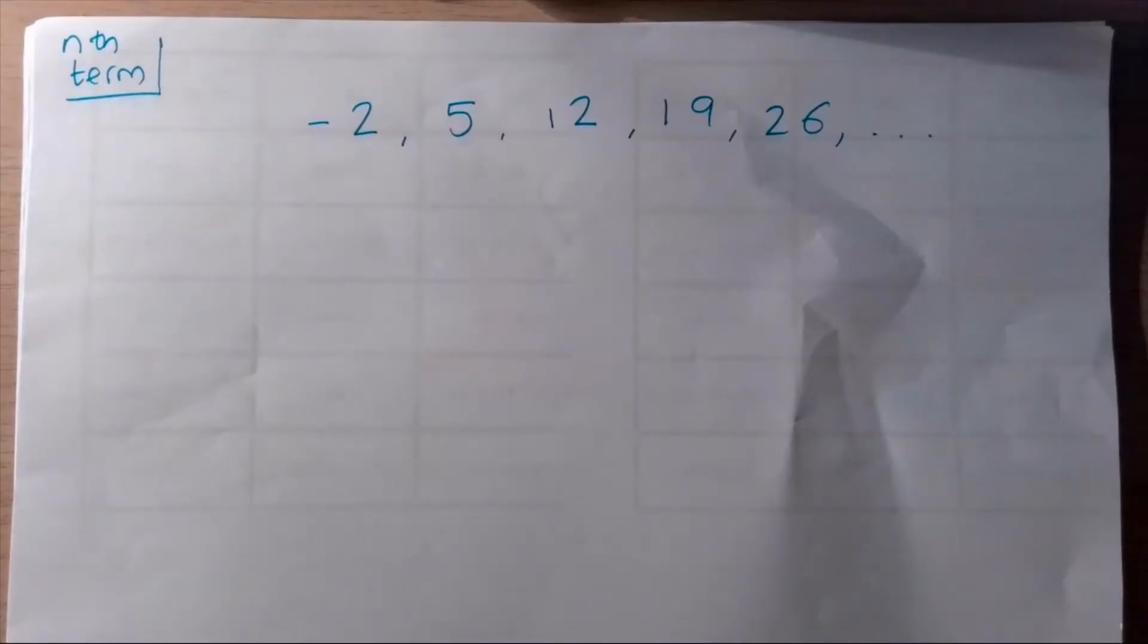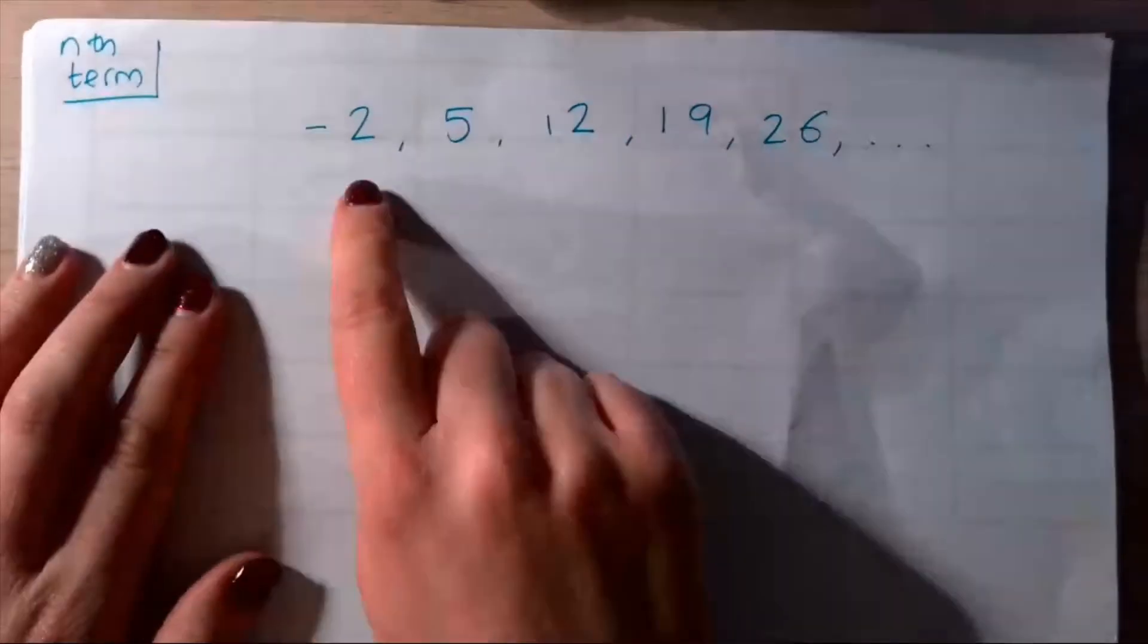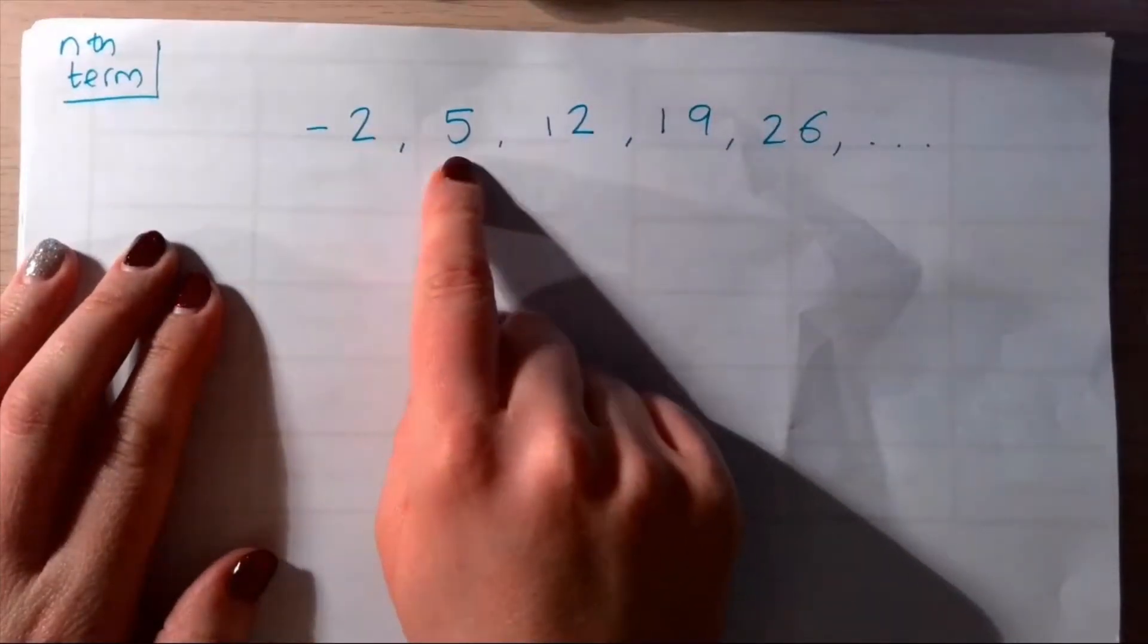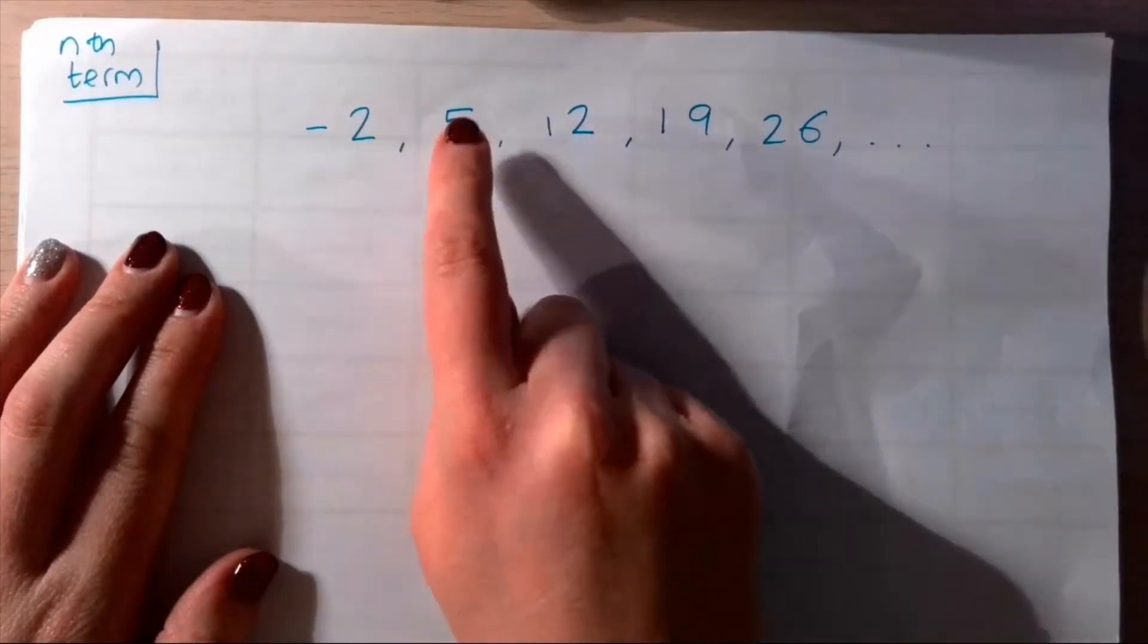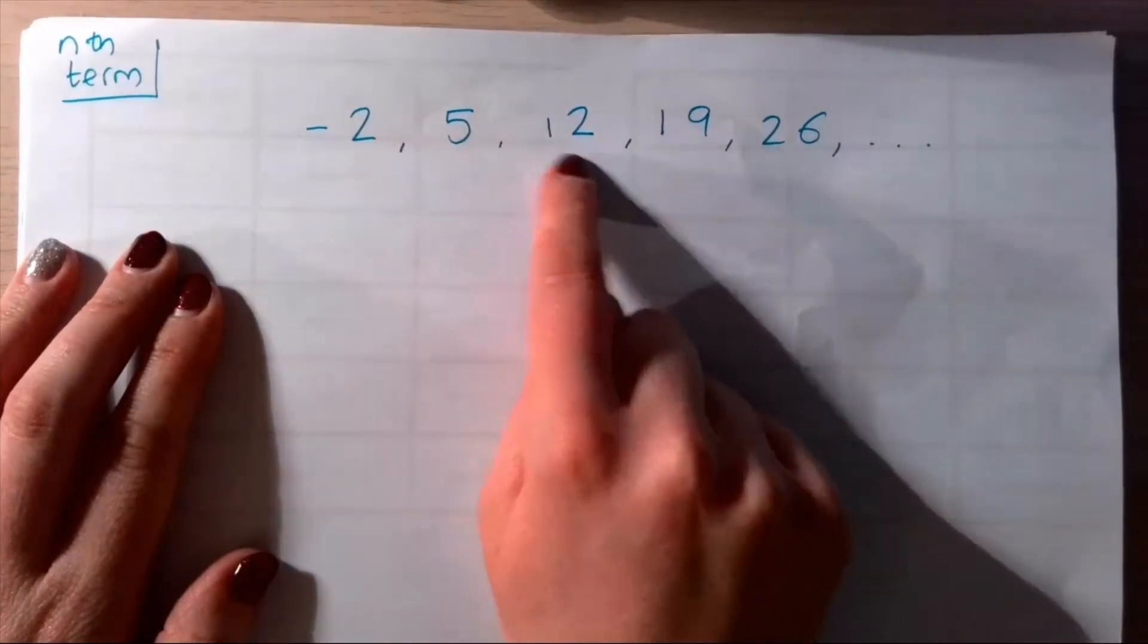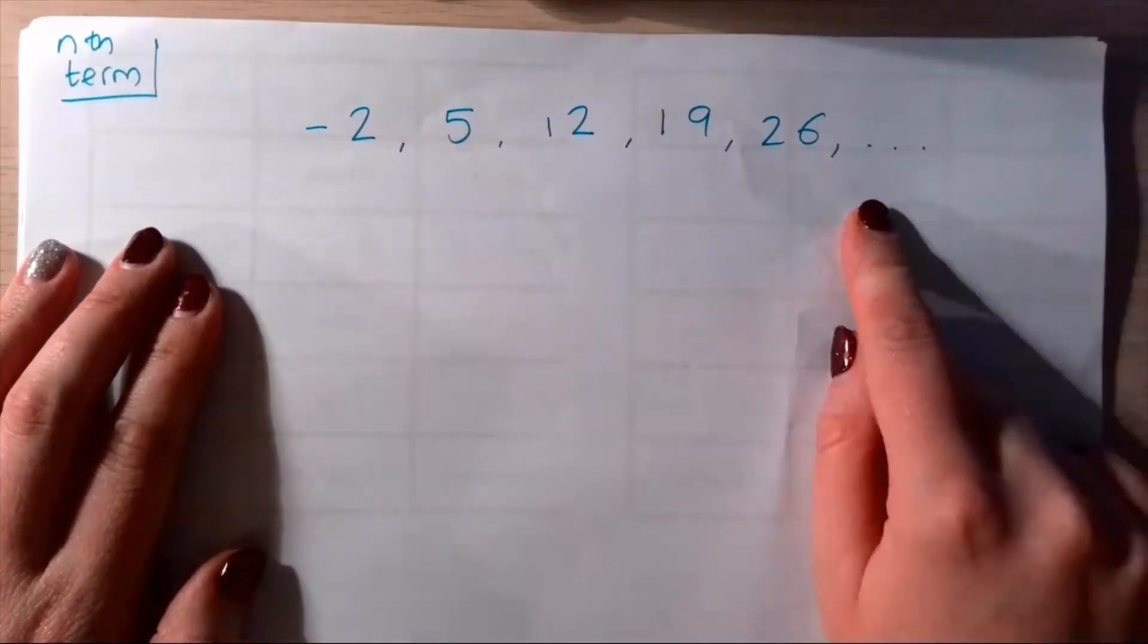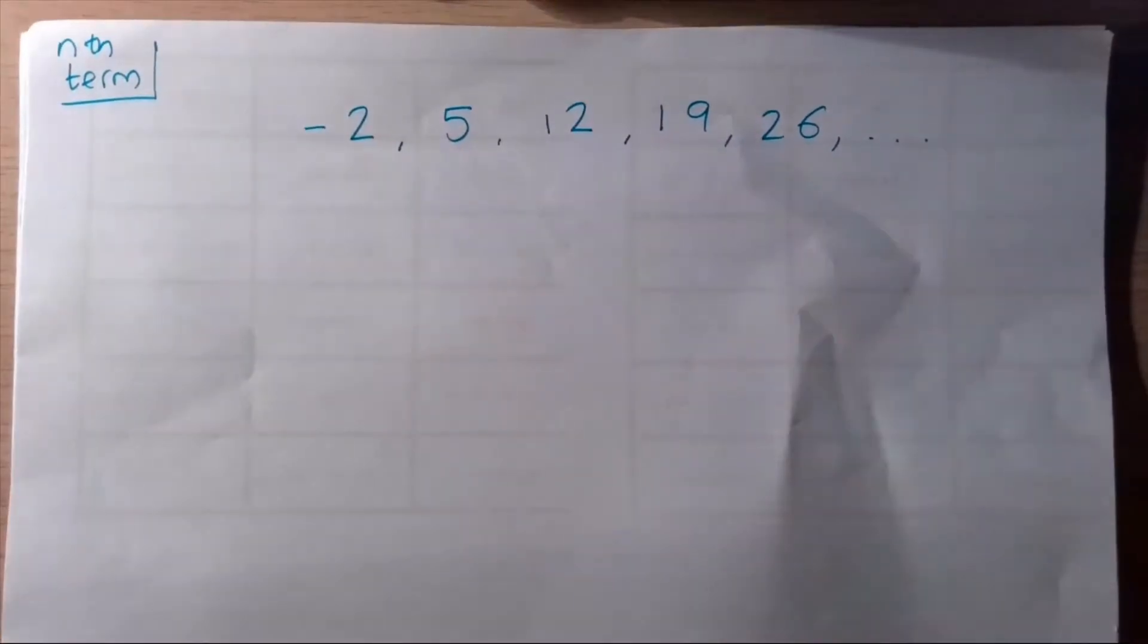Hi everyone, welcome back to maths. If you remember before Christmas, we were doing sequences and the nth term of linear sequences. A linear sequence is where the terms increase by a constant number, so the difference is the same each time. In this case we're adding seven each time, so we know it's a linear sequence.